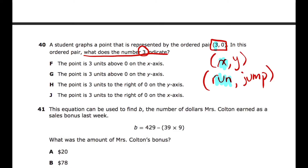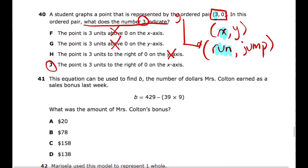Looking at the answer choices: 'three units above zero' would indicate a jump, but three is the run — eliminate. 'Three units to the right' could work for run, so keep it. 'Three units to the right of zero on the y-axis' doesn't make sense because the y-axis runs up and down, not left and right — eliminate. 'Three units to the right of zero on the x-axis' — yes, that is correct. Reading carefully eliminates three choices, leaving the correct answer.